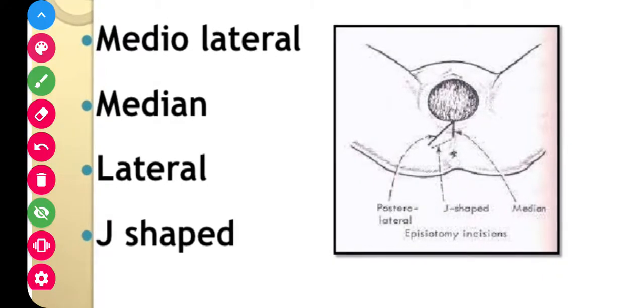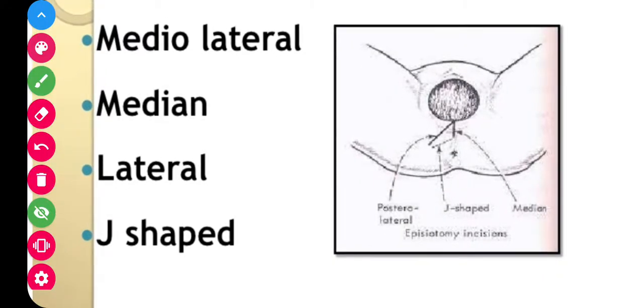It is an incision which is made on the perineum and the posterior vaginal wall during the delivery or second stage of labor. It is in fact an inflicted second degree perineum injury. It is the most common obstetric operation which is performed for the fetus to come out.